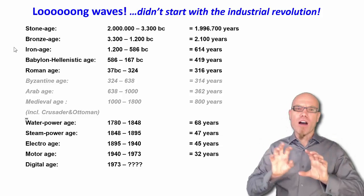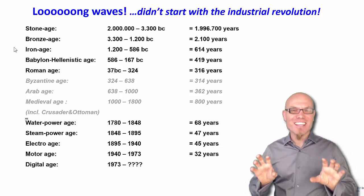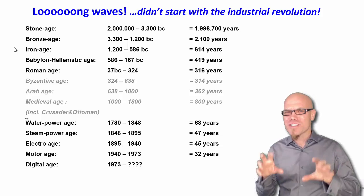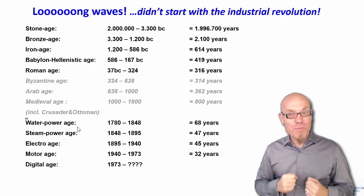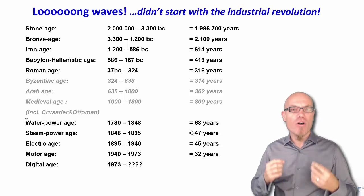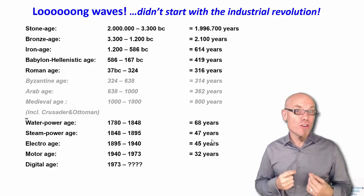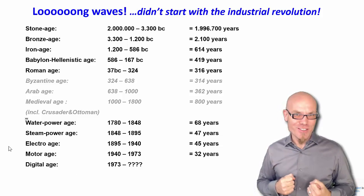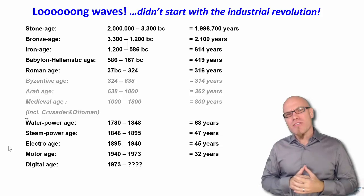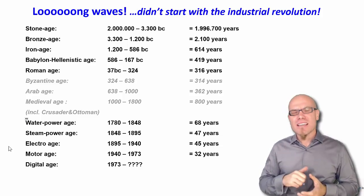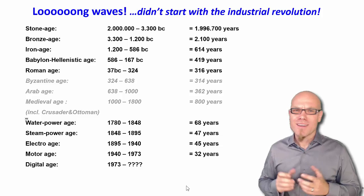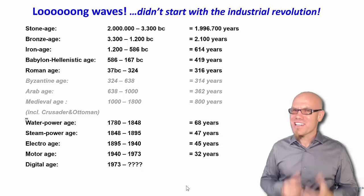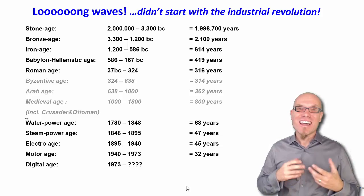After the iron age, humankind split apart into different groups, settings, and geographical regions, so it is not as clear-cut how this continued. But then water power started in the 1780s, followed by steam power, electronic power, motorization, the internal combustion engine, and digitalization. Taking this historical bird's eye view, you notice that the lengths of the periods characterizing social evolution always become shorter and shorter—things seem to become faster and faster.